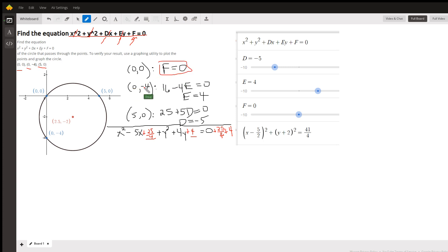Put 0 in for X and negative 4 in for Y. Y negative 4 squared is 16. Again, X is 0. Put negative 4 in for Y, and you get negative 4E. We already know F is 0. So E equals 4.